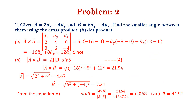Next, Problem 2. Given A is equal to 2ax plus 4ay and B is equal to 6ay minus 4az. Find the smaller angle between A and B using the cross product and dot product.